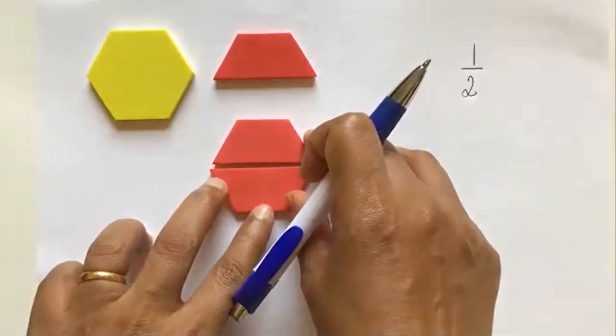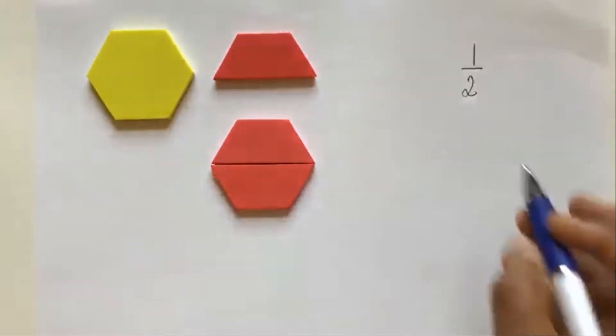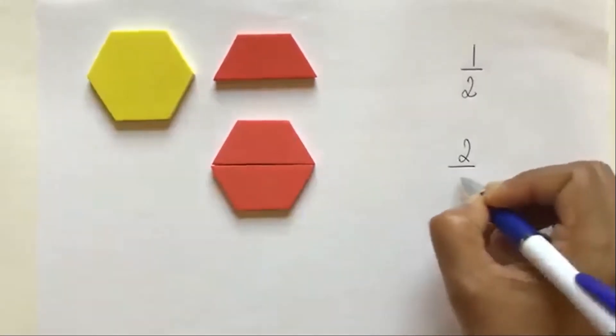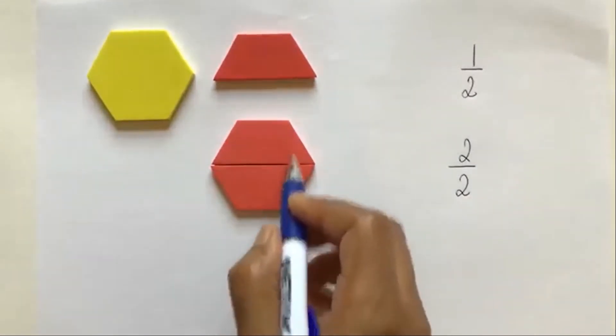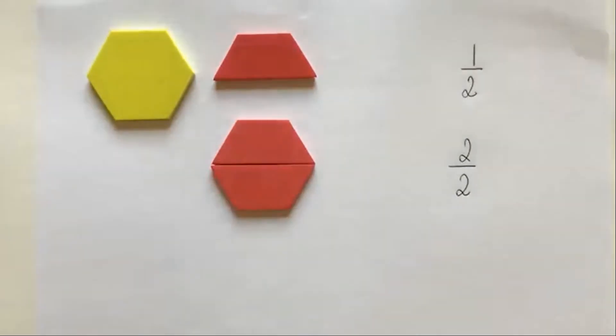If I give two of the trapezoids, that is going to be one half, two halves. And as you can see, two halves is the same as my one whole.